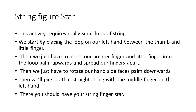So we are going to try to make a star with string. For this activity, you require a small loop of string. We start by placing the loop on our left hand between the thumb and little finger. Then we just have to insert our pointer finger and little finger into the loop, palm upwards, and spread the fingers apart. Then we just have to rotate our hand sideways, palm downwards. Then we will pick up the straight string with the middle finger on the left hand — and there you should have your string finger star!